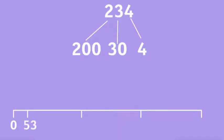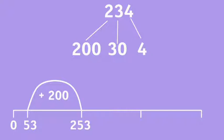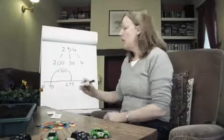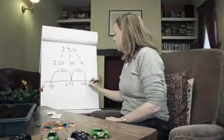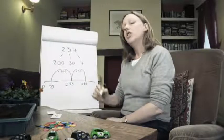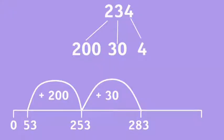53 plus 200 is 253. 253 plus 30 is 283. 283 plus 4 is 287.